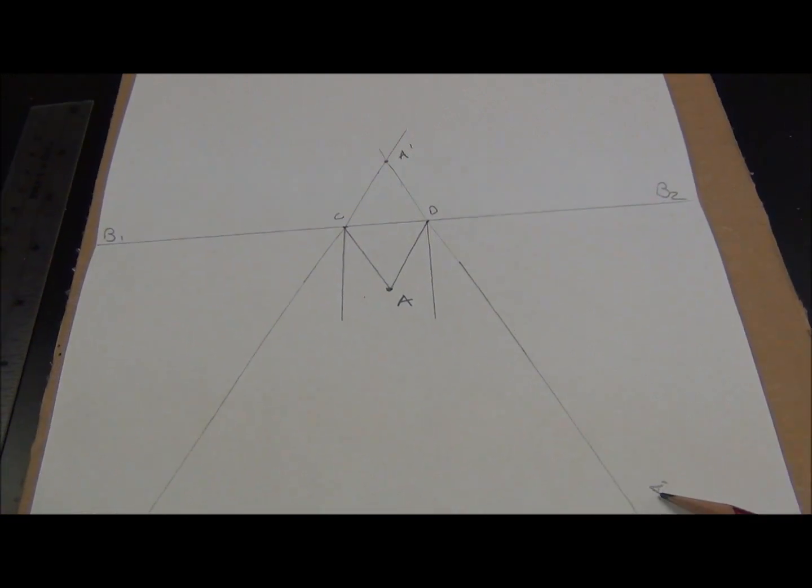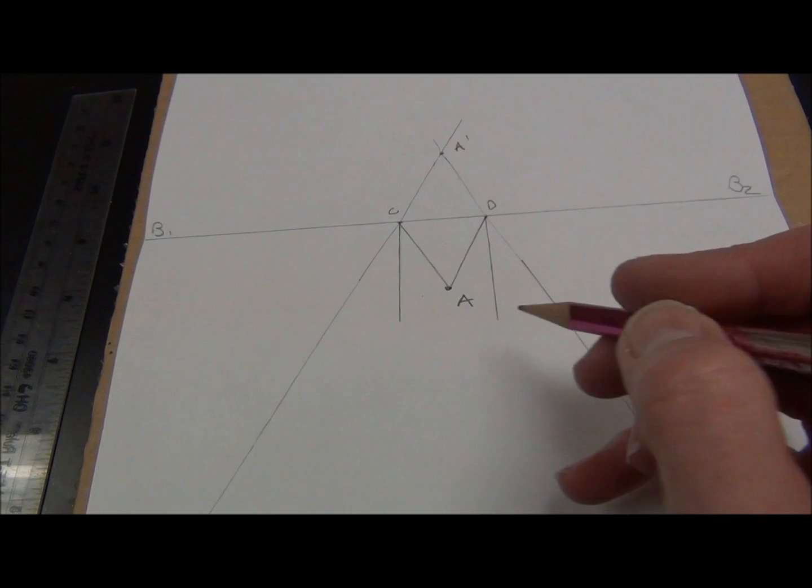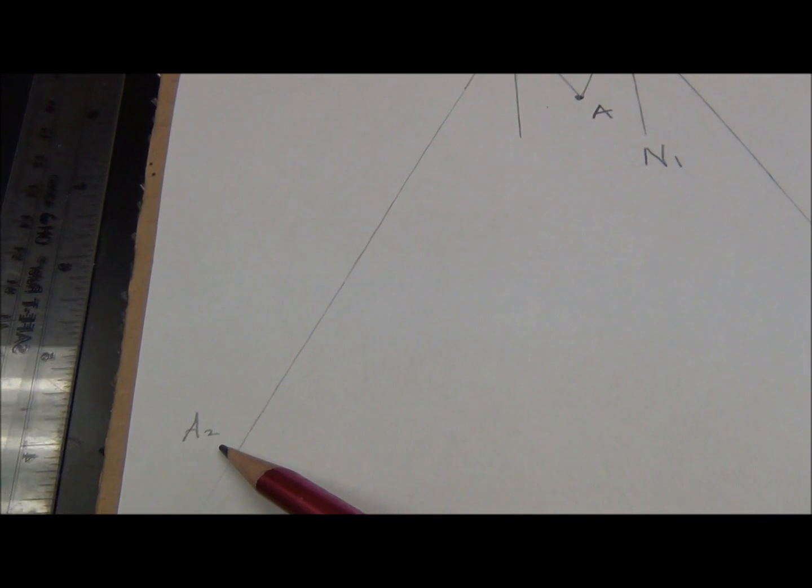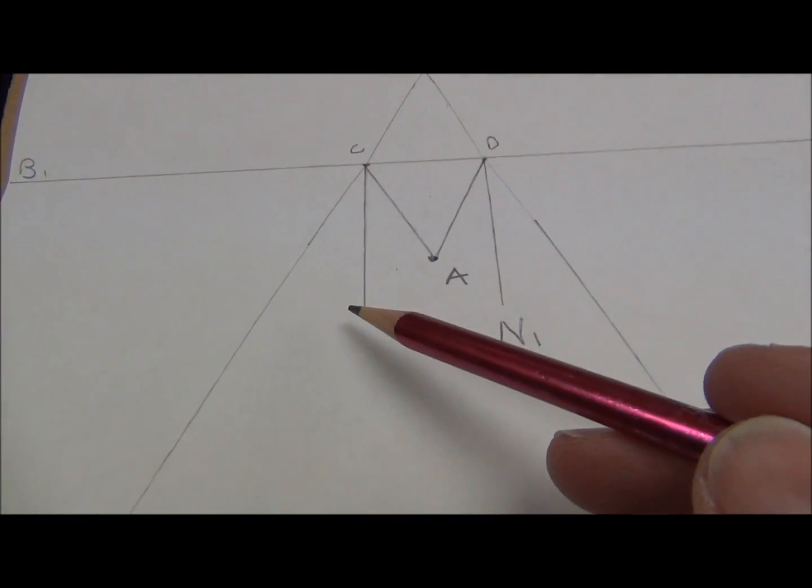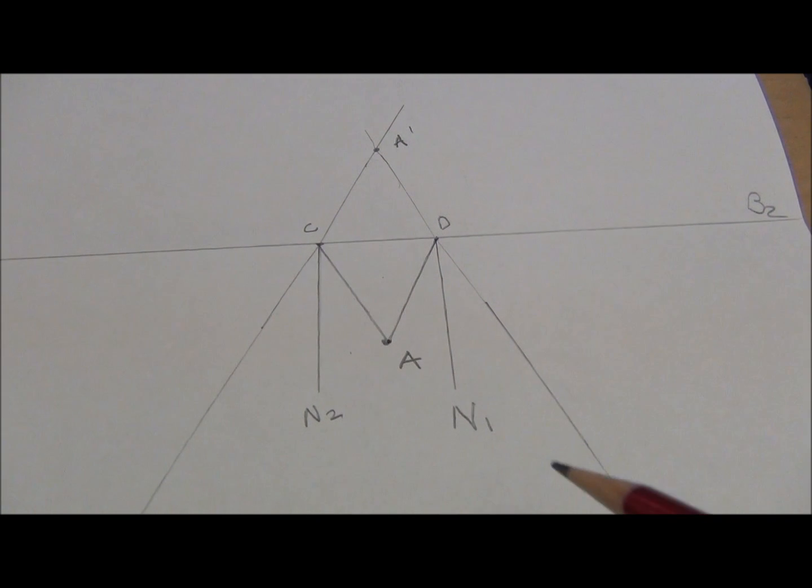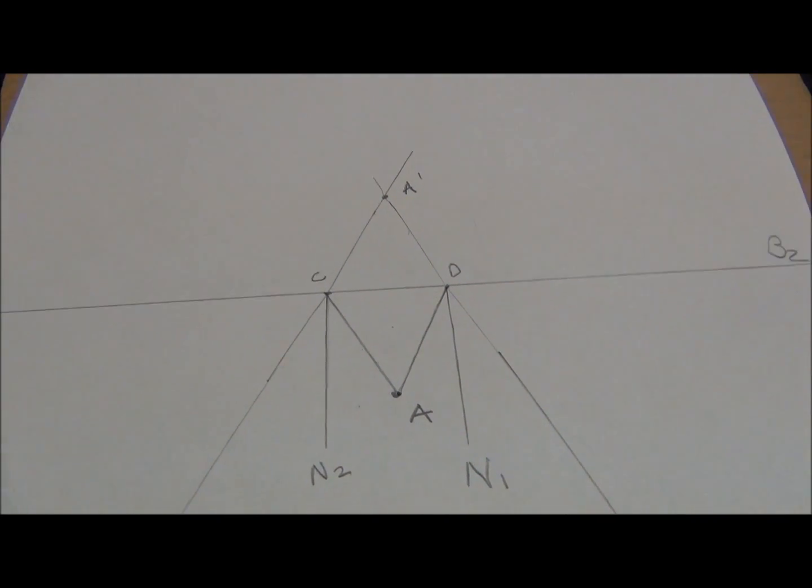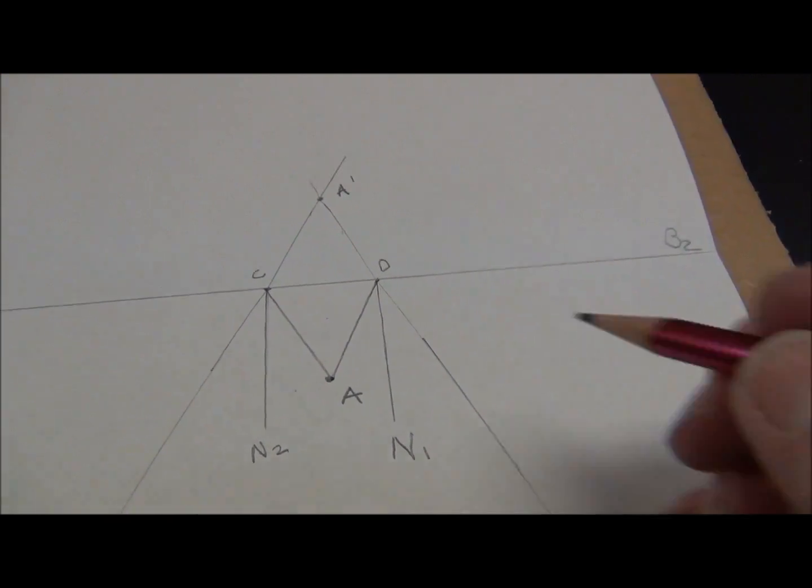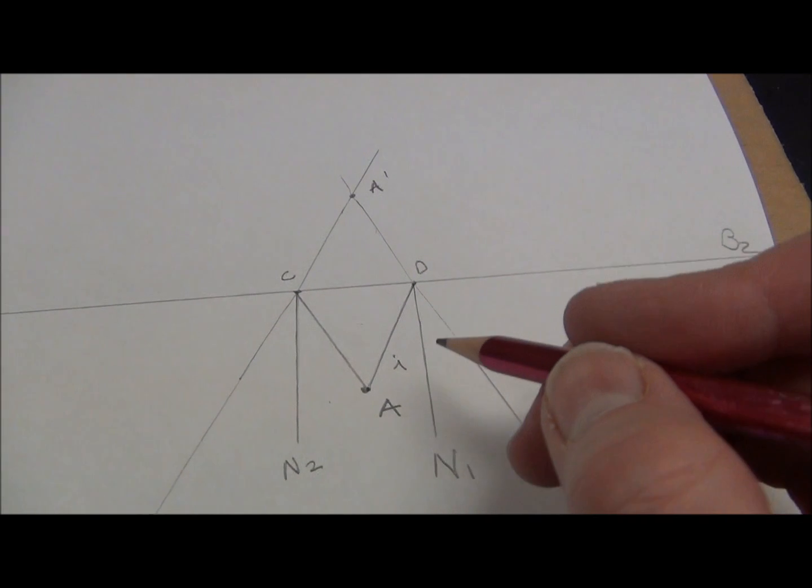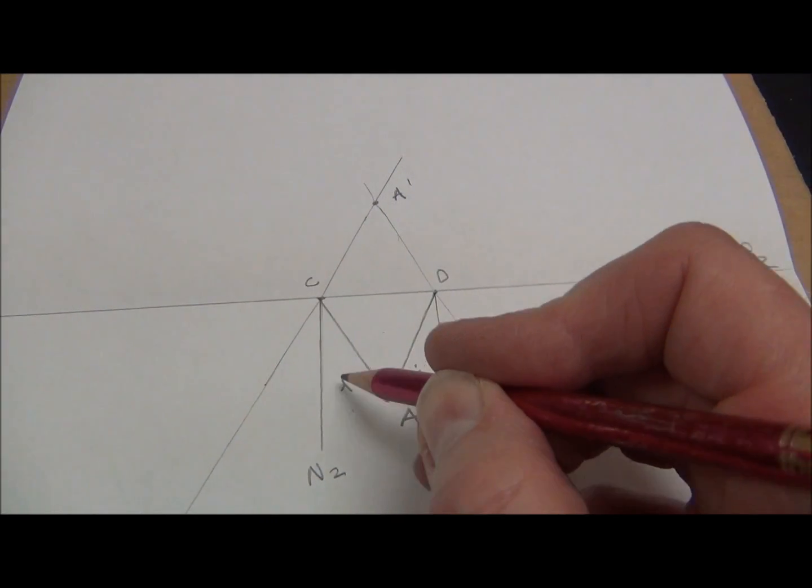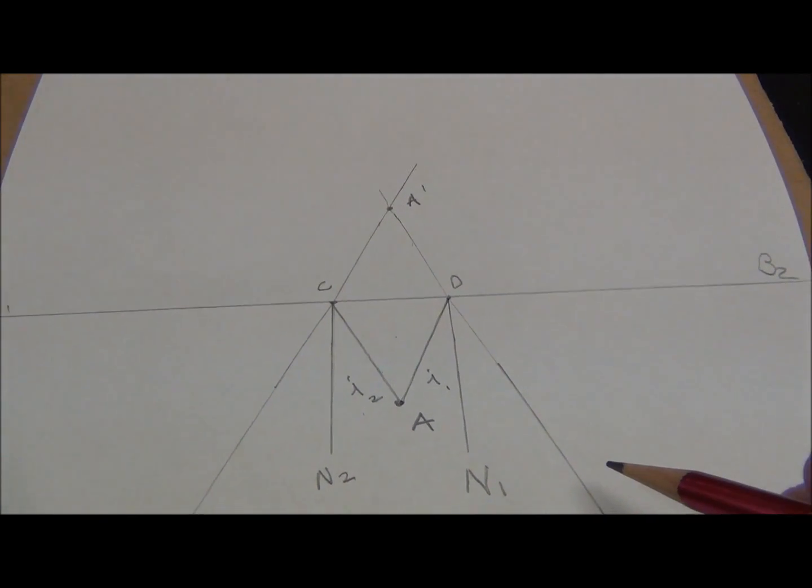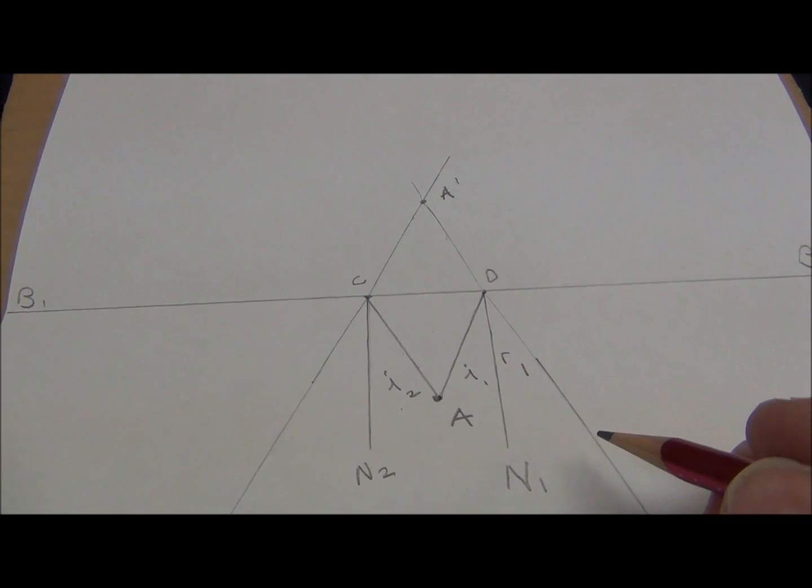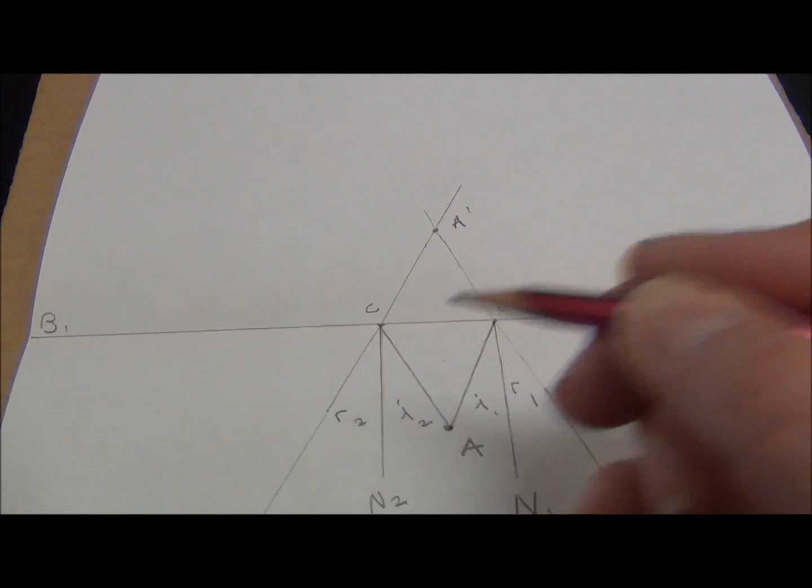Since this is A1, I'm going to call this N1. Since this is A2, I'm going to call this N2. I have some angles that need measured. We will have the incident angle. There is incident angle 1. This is incident angle 2. We need the reflected angle. This is reflected angle R1. This is reflected angle R2.